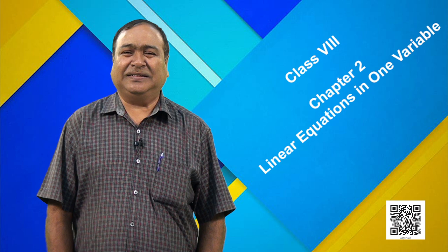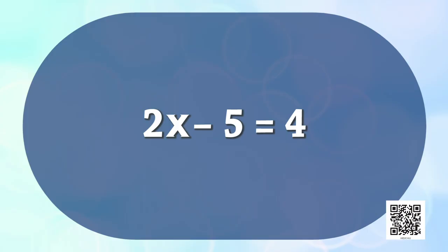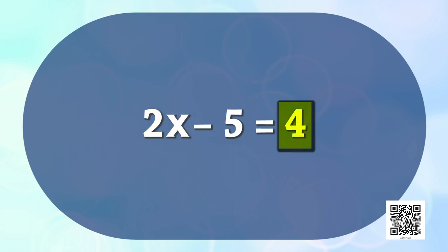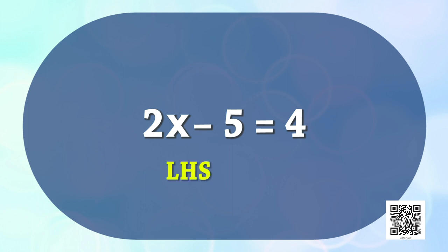Let us express this by taking one example. Consider the equation 2x − 5 = 4. Observe that here the variable is present on one side and a constant on the other side, with equality also present. The expression on the left side of the equality sign is the left hand side, and the expression on the right side is the right hand side. Such expressions where the power of x is 1 we call a linear equation in one variable.